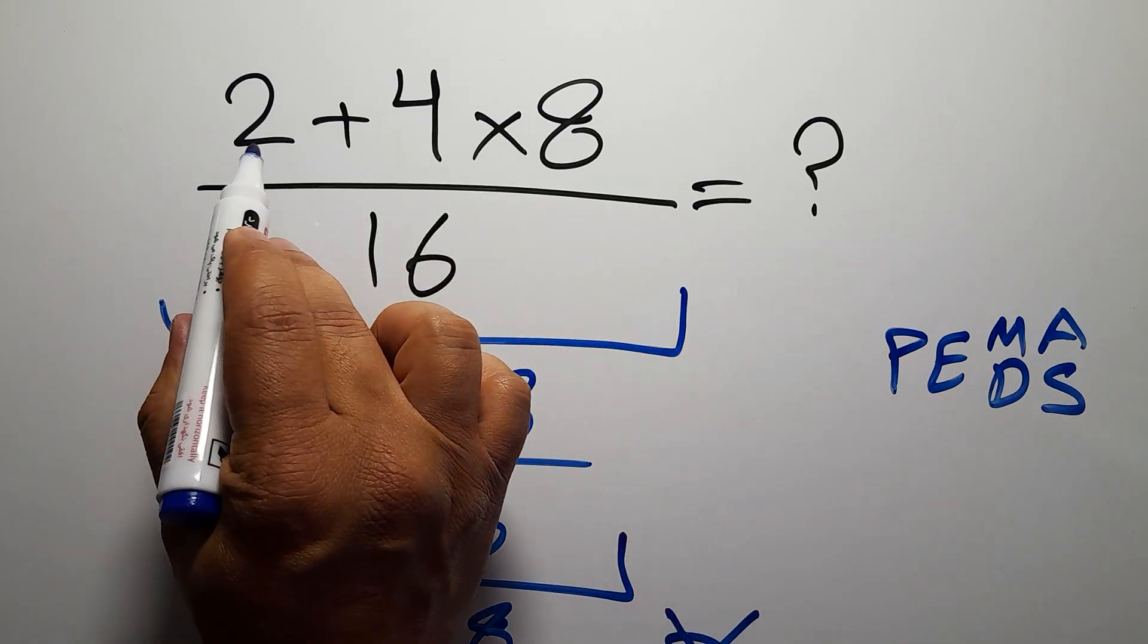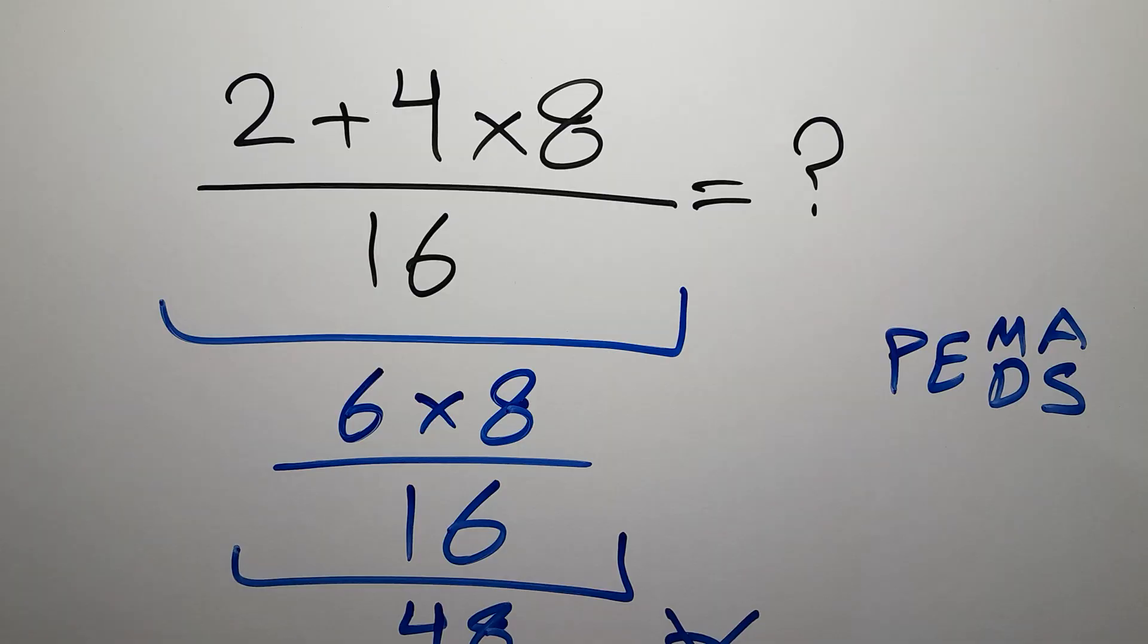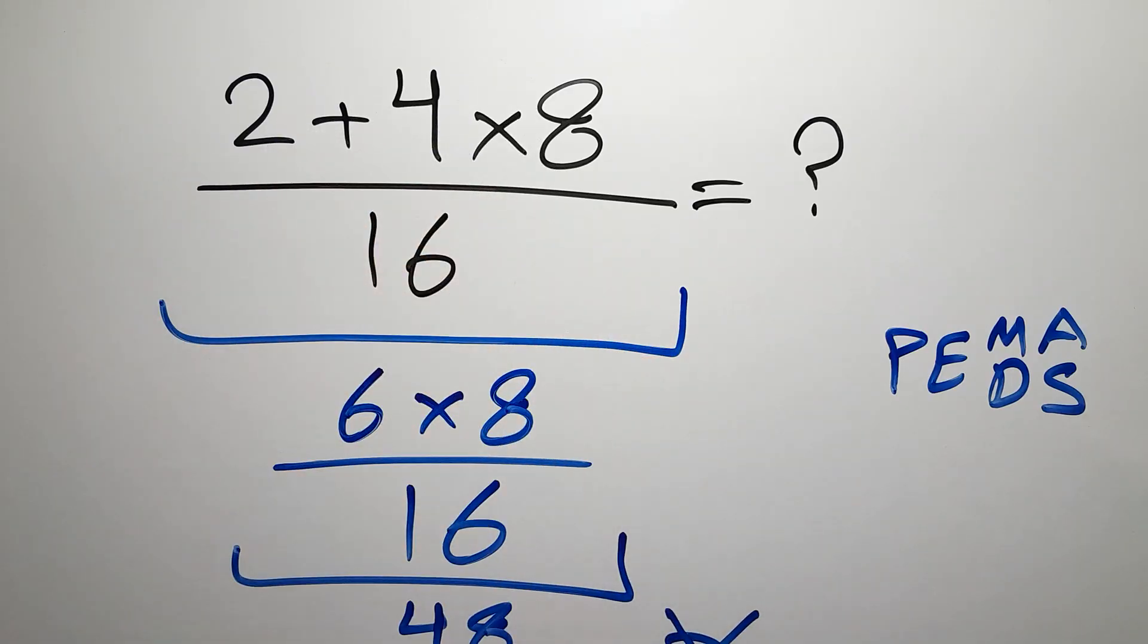So here in the numerator, first we have to do this multiplication, not our addition. First this multiplication, then this addition.